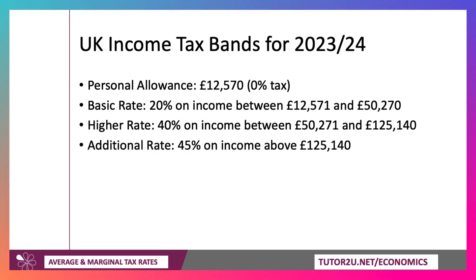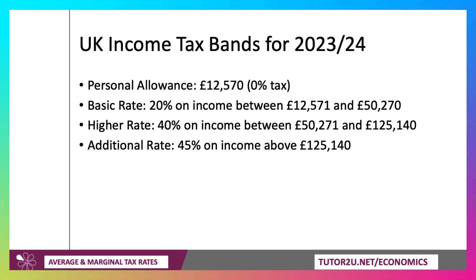There's also an additional rate — the top rate — of 45% on any income above £125,140. There's a bit of a complication here: at that level of income, you also start to lose your income tax allowance. But for simplification, I'll assume the income tax allowance remains the same.